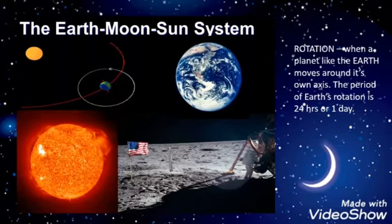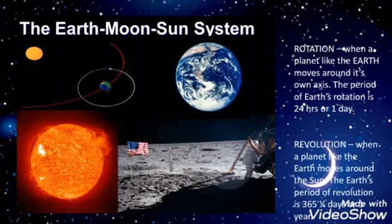While the earth is moving on its own axis, it also moves around the sun. This movement around the sun is called revolution. Revolution is when a planet like the earth moves around the sun. The earth's period of revolution is 365 and one-fourth days or one year.